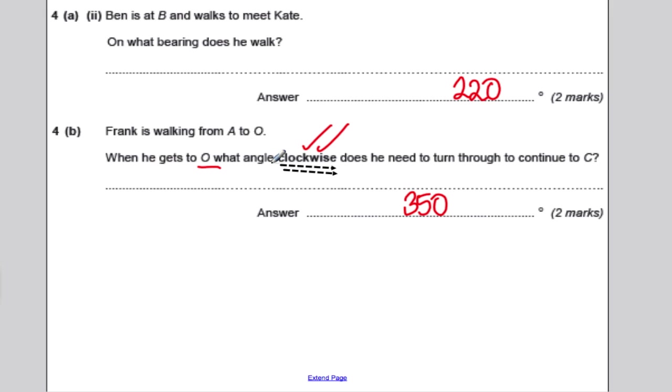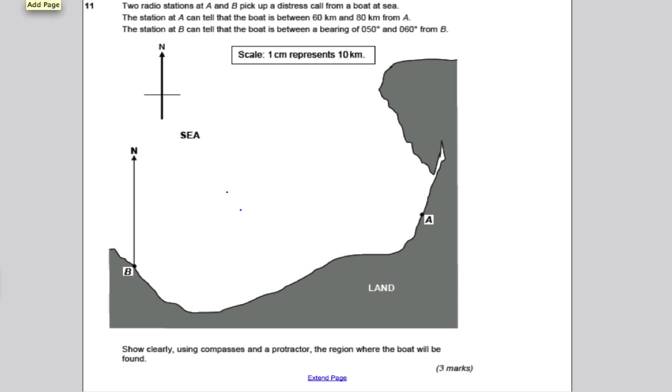Another question on bearings. Pause the video. If you've got a copy of the exam in front of you, it would be better. If not, maybe you could use the screen, but really should have a copy of this. So pause the video, have a go, then mark your work against mine. It tells us a few facts. It says that there's a ship at sea that's distressed, and we're getting signals at B and at A about where it is.